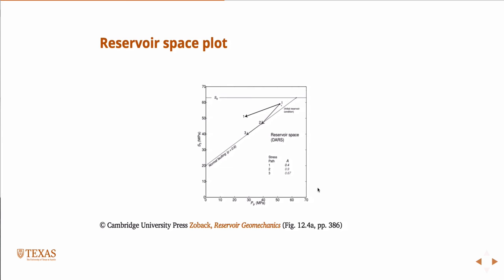So then there's this idea, Zoback introduces this idea of the reservoir space plot. So this is S3 is a function of pore pressure, and then here's this .6 normal faulting line. And the direction you'd go, I mean, the slope of this guy is A. The slope...